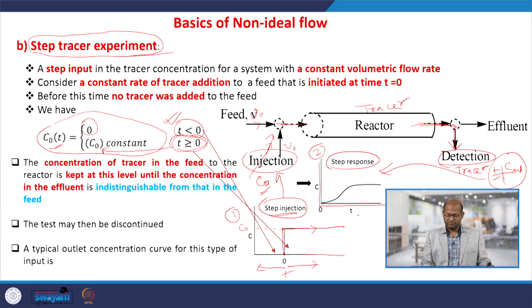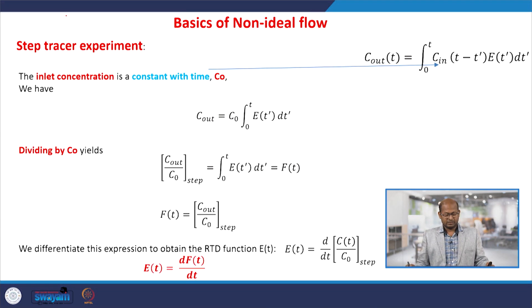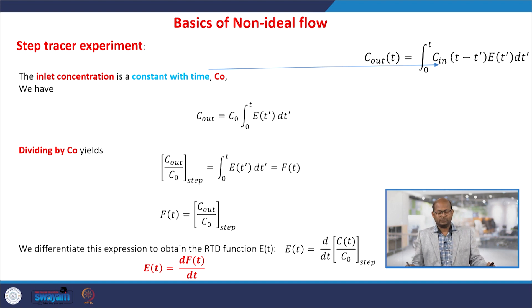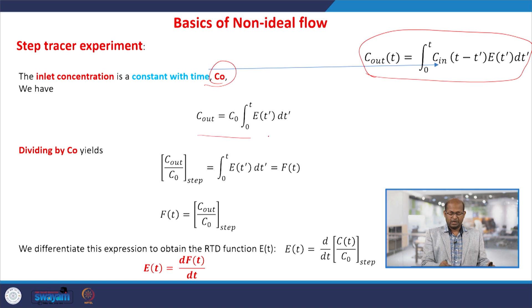This is called the response curve. If we plot C versus t, then the response would look like this: initially it was 0 and after a certain period of time the concentration remains constant. This is the step injection and this is the step response — that is how the step tracer experiment looks. From the experiments we know the concentrations and times, and the inlet concentration is constant.